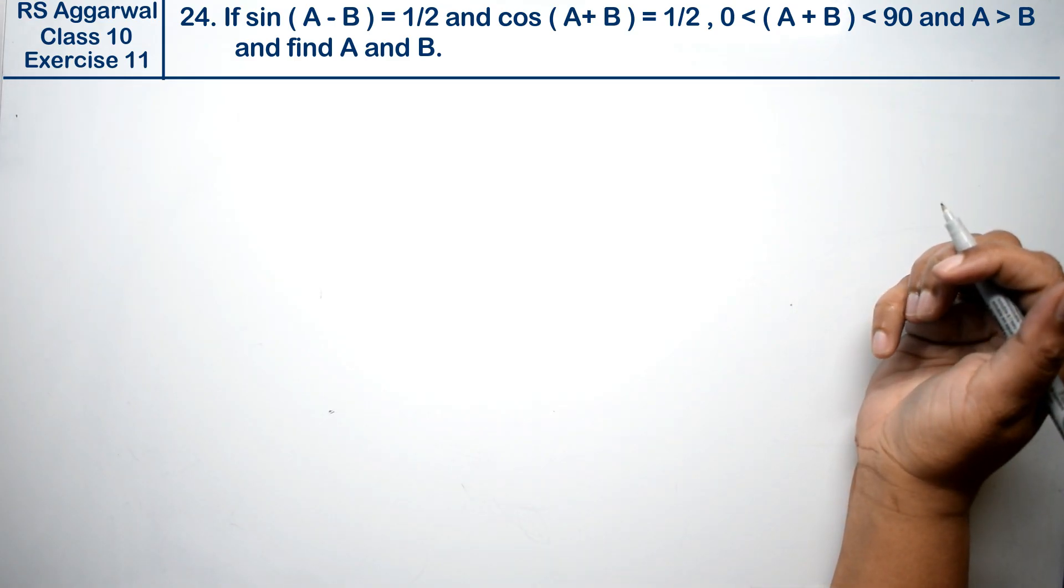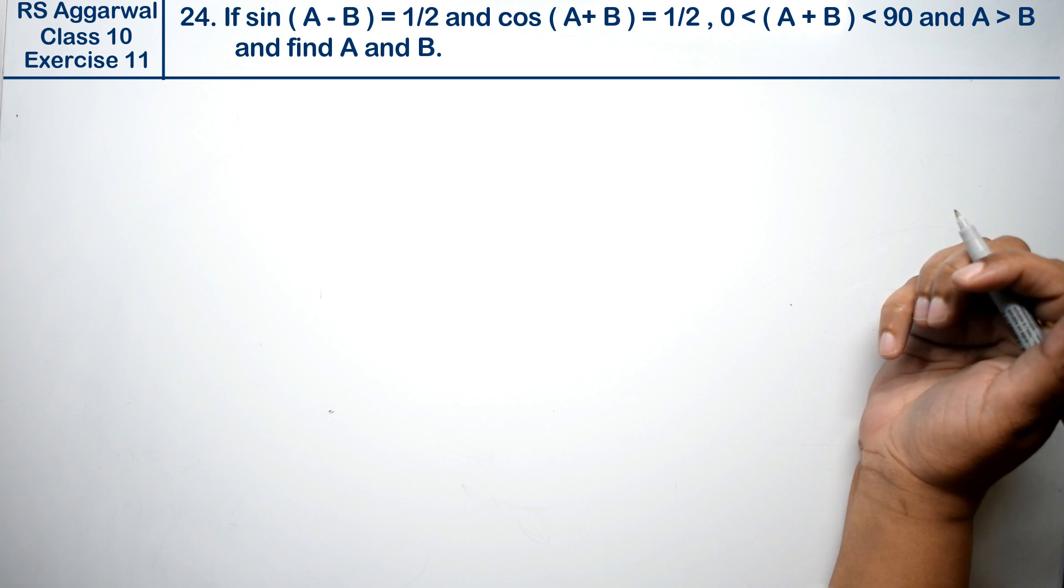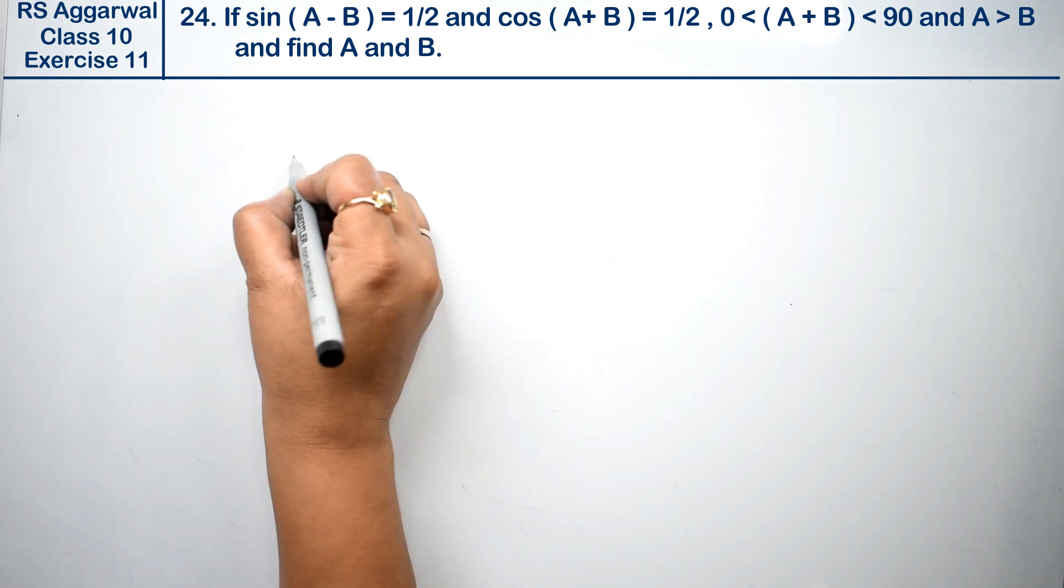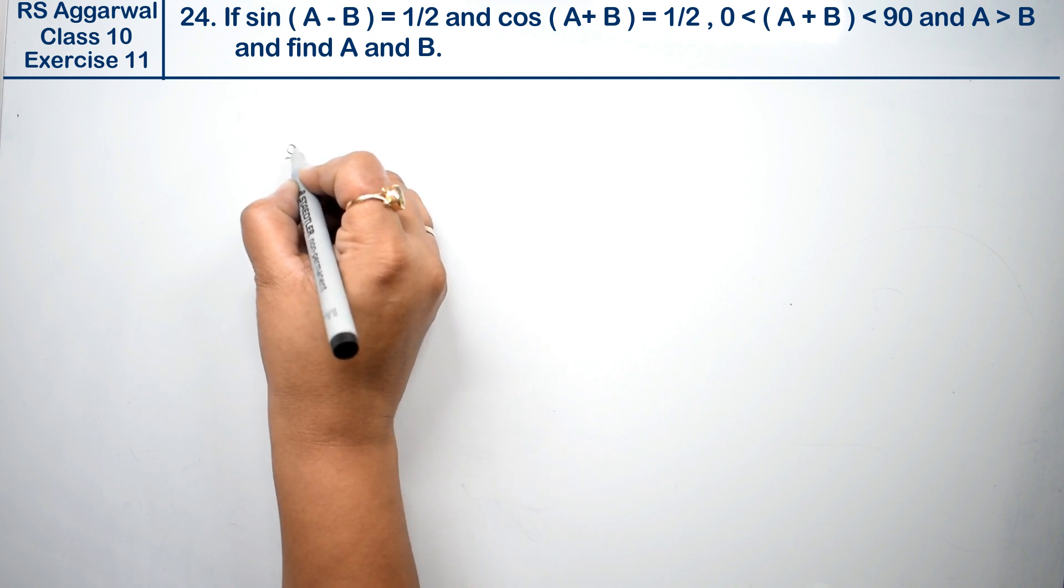Let's do question number 24 of exercise 11 on trigonometric ratios of some particular angles. Question number 24: if sin(A - B), sin(A - B) ki value dei rakhi hai...